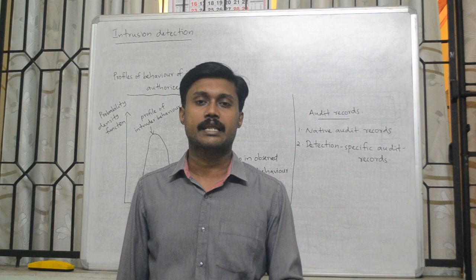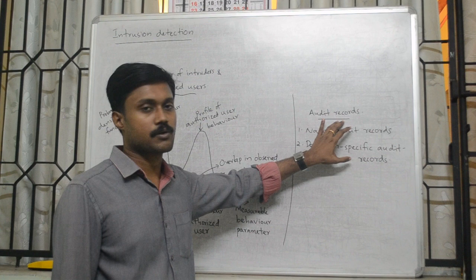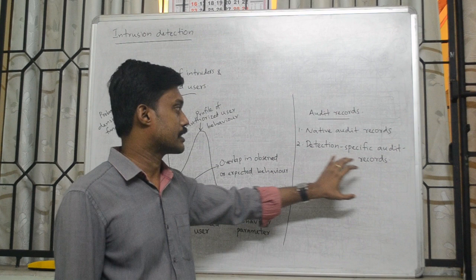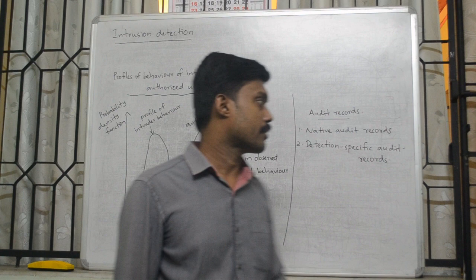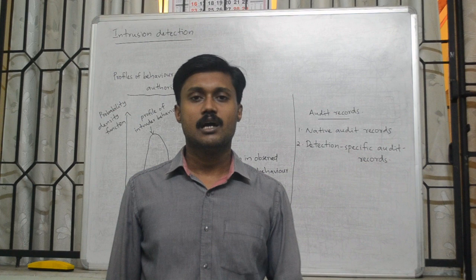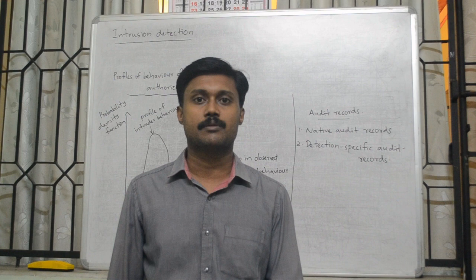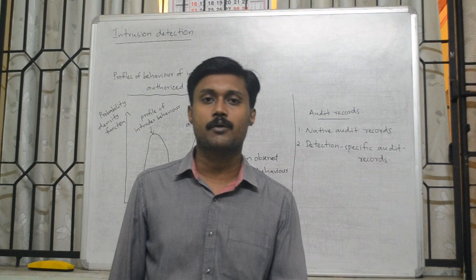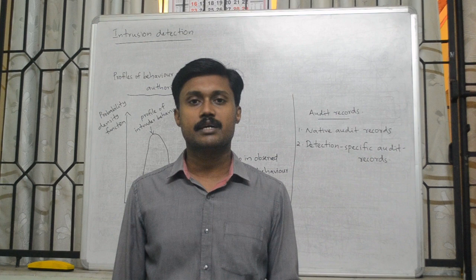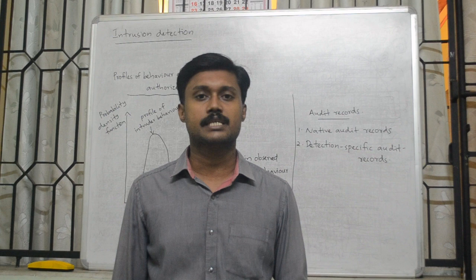There are two types of Audit Records. One is Native Auditor Records, and the second is Detection-Specific Auditor Records. Native Auditor Records — it is called a multi-user operating system. It is called accounting software. It is called behavior, accounting, and software. It records the ongoing activities of the users.